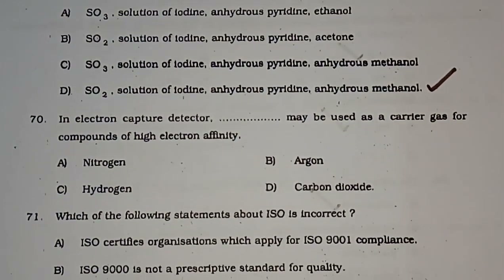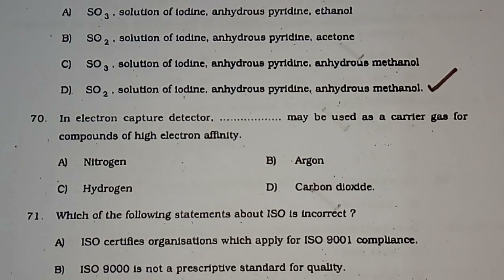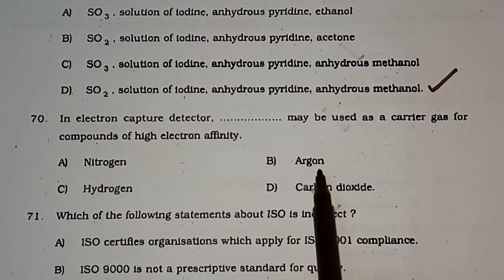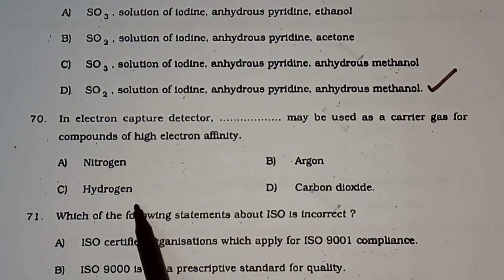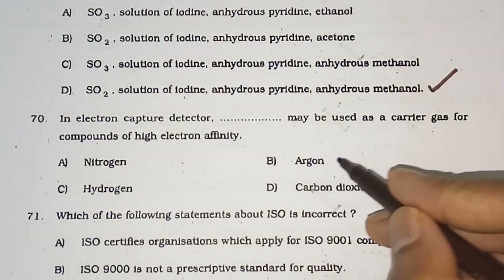Question number 70: In an electron capture detector, which gas may be used as carrier gas for compounds of high electron affinity? Options are nitrogen, argon, hydrogen, or carbon dioxide. The correct answer is argon.